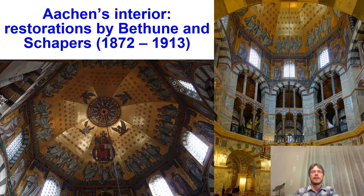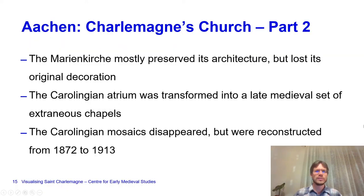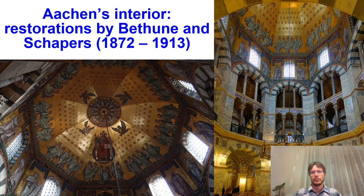At present Aachen looks like this on the inside. The mosaics were redone in the late 19th and early 20th century. Here we have the tambour, which does not reflect what the interior looked like originally, and there is the dome. The dome is more or less correct, depicting Christ enthroned, the four animals—the tetramorphi—and the 24 elders of the Apocalypse. The original pylons, arches, and Carolingian columns are preserved; some were removed by Napoleon but are now back, and the building is more or less intact.